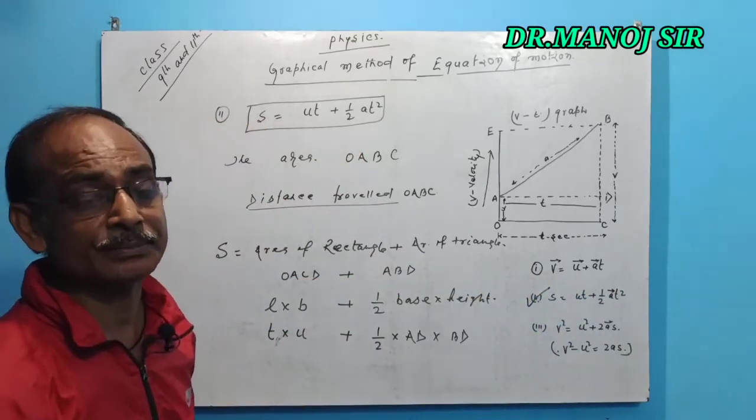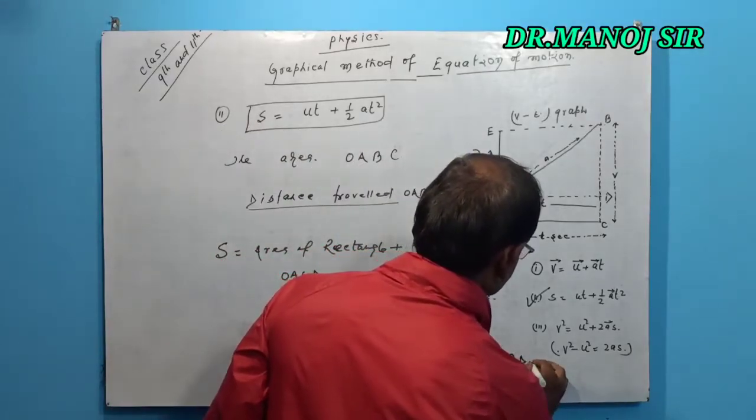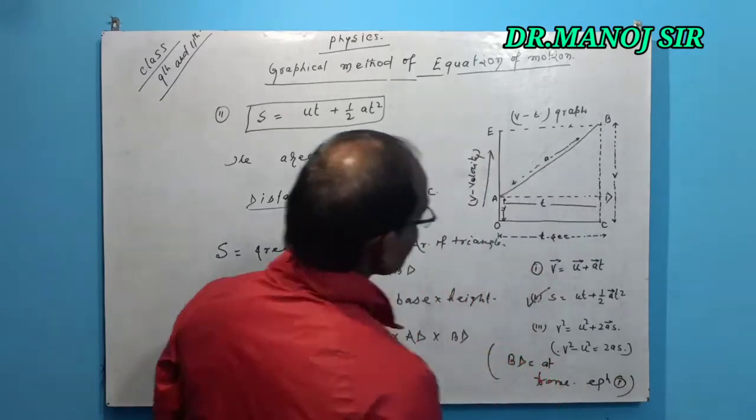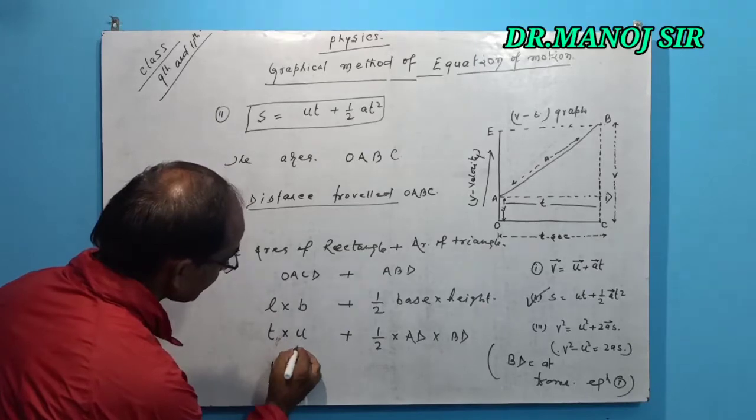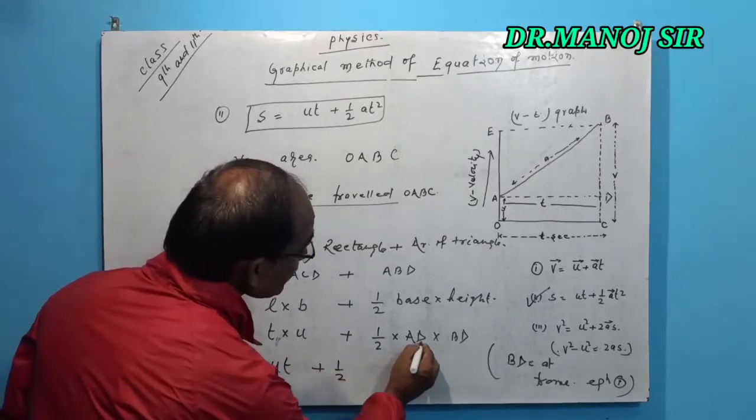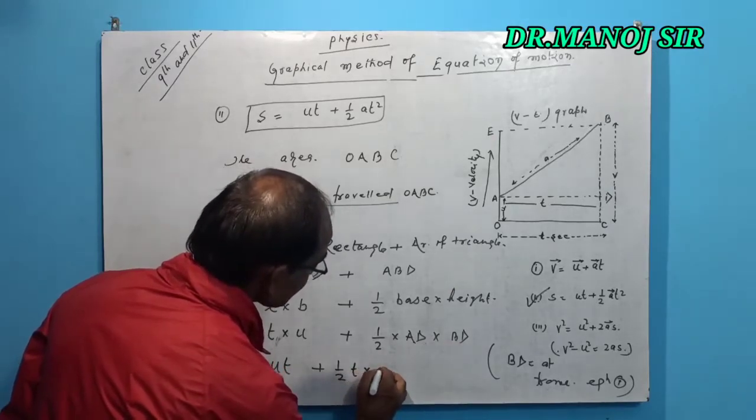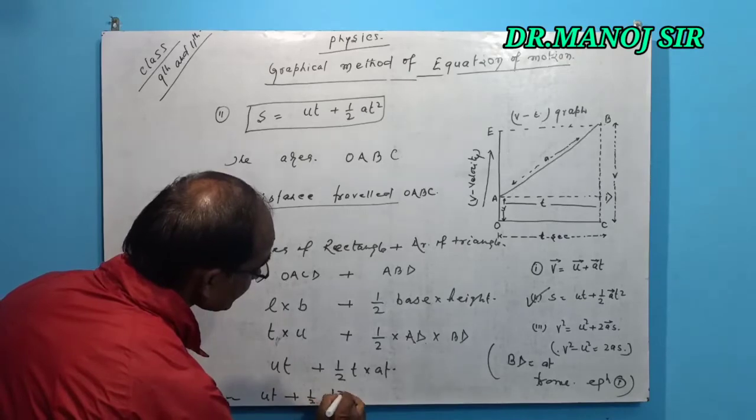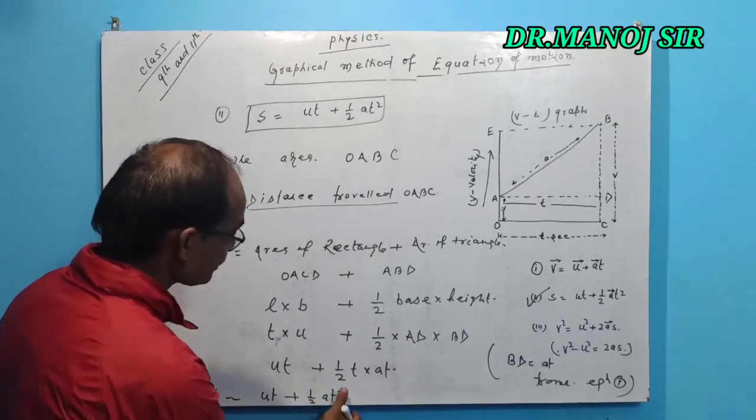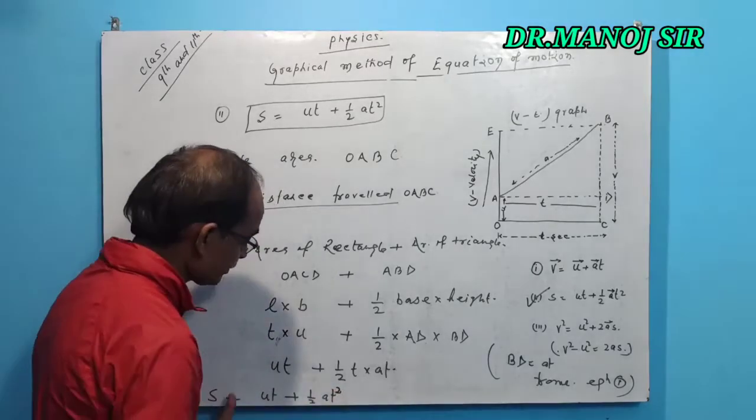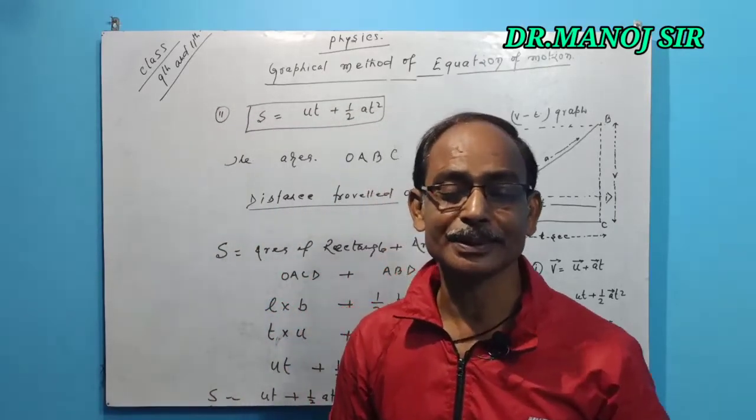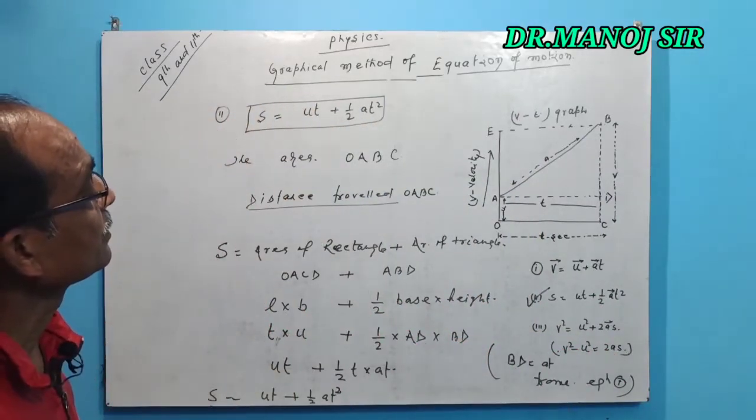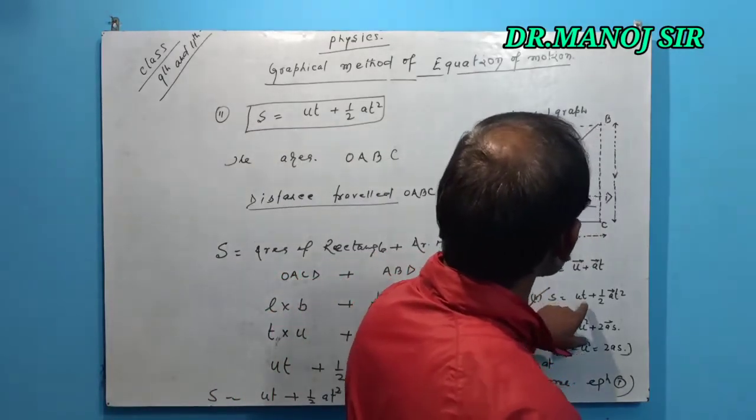Now it can be rearranged: u t plus half t into a t, that can be s equals u t plus half a t squared.